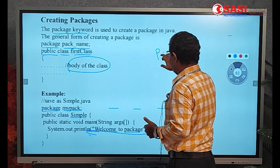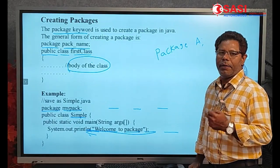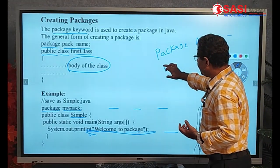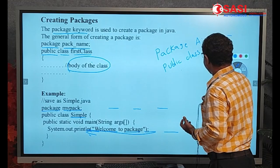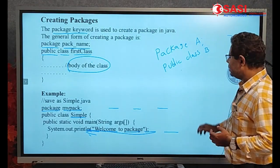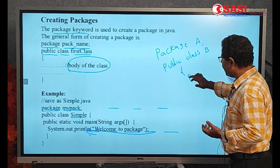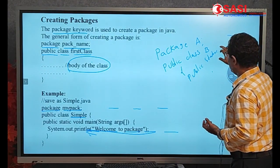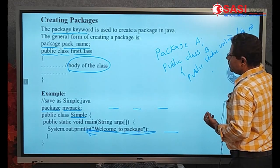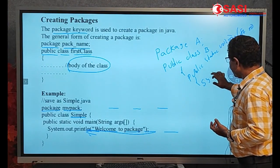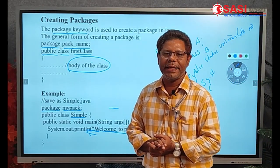Here is another example. Consider a package A. Inside this package, we write a public class B. So A is the package name and B is the class name. In class B, we write the main method: public static void main(String[] args). Inside the main method, we write System.out.println('Welcome to packages'). This is how we simply write packages in Java.